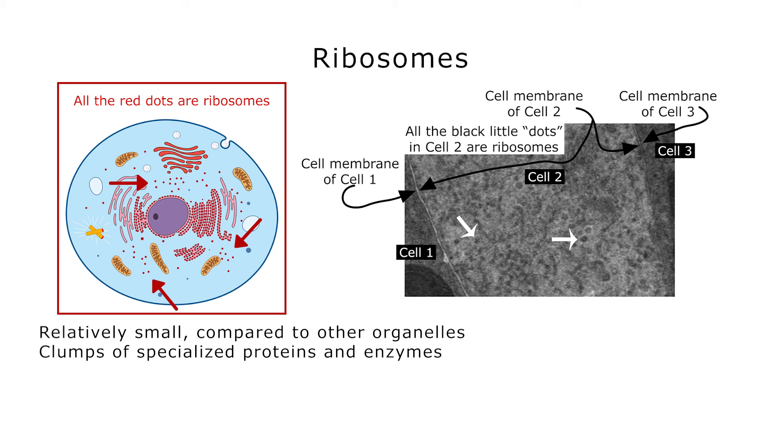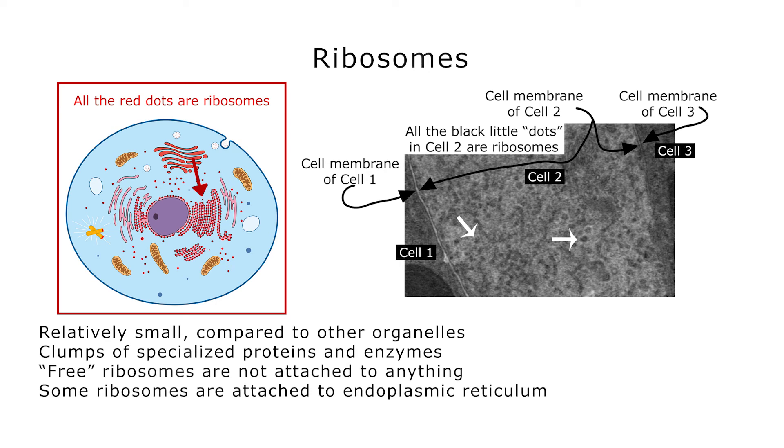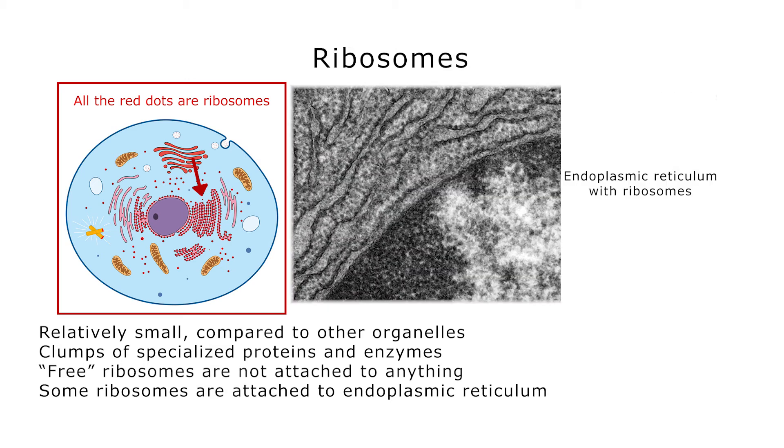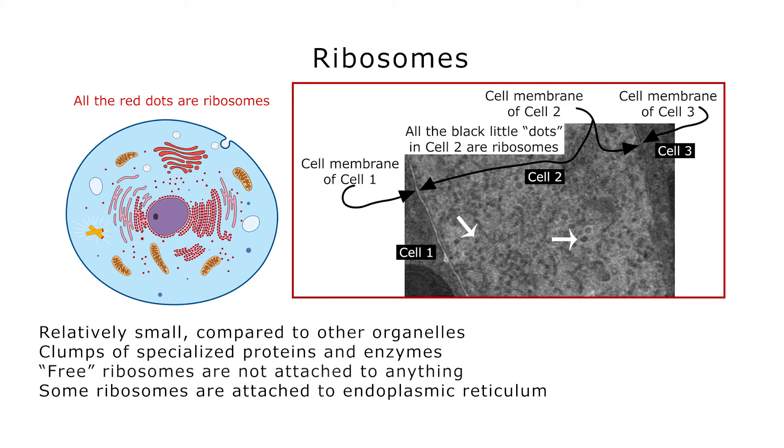And you can see here that there are many ribosomes that are what we call free in the endoplasm, meaning they're not attached to anything. But if you look right here at about the three o'clock position at this curvy stuff that's got dots on it, those are ribosomes that are attached to something that we call endoplasmic reticulum. And that's very common. And we'll see pictures of these.